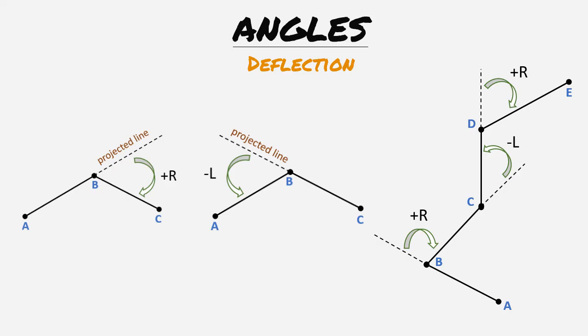Our last deflection angle between lines CD and DE can be determined by projecting a line from point D. We then measure our deflection angle to the right towards line DE.